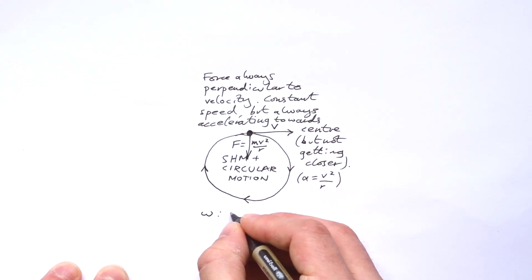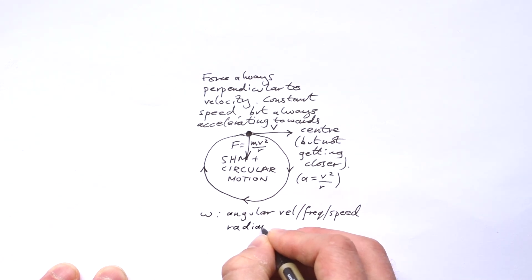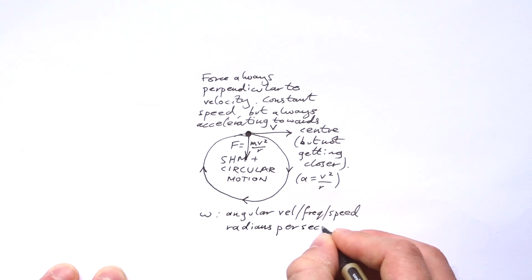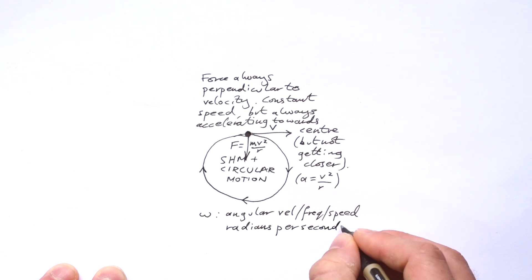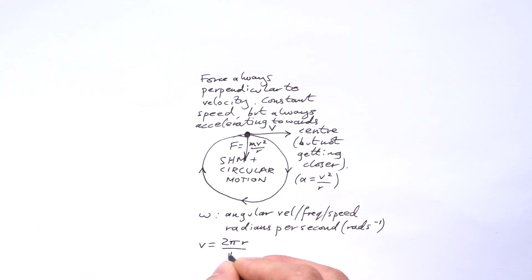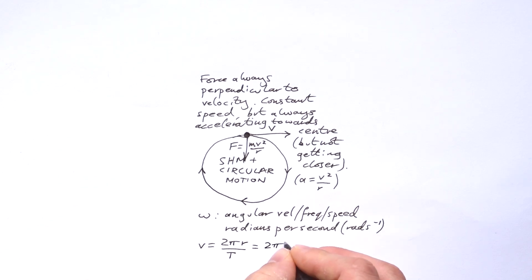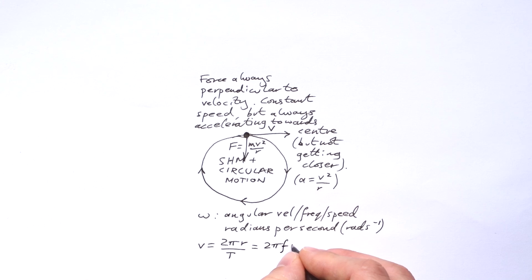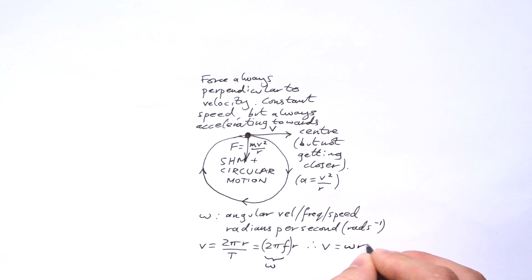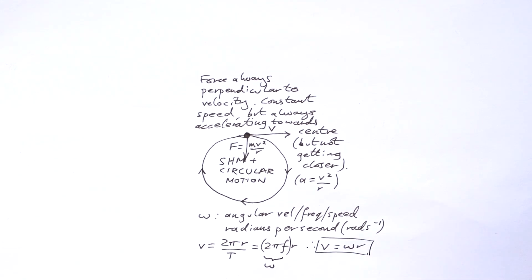So omega looks like a w, but it's not. It is angular speed or angular velocity or angular frequency, three names for the same thing. It's how fast something spins, but it's not revolutions per second, because that would just be normal frequency. It's radians per second. So let's have a think about this. Velocity is going to be circumference 2 pi r divided by time period. That's the same as 2 pi f r. And we know that frequency times 2 pi is going to be radians per second. So actually, v is equal to omega r. Very important equation to remember.